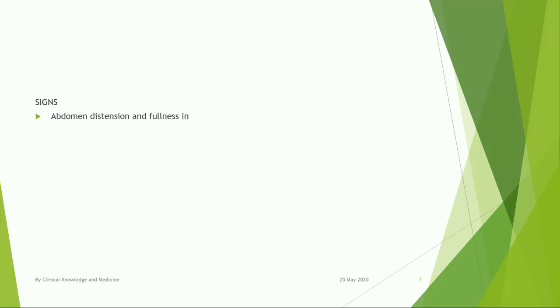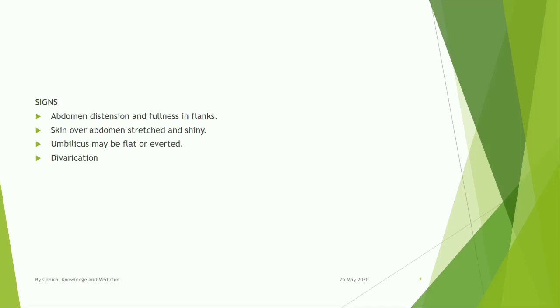Signs: abdominal distension and fullness in flanks. Skin over the abdomen is stretched and shiny. Umbilicus may be flat or everted. Diastasis recti and hernia may be present. Abdominal wall may show distended veins.